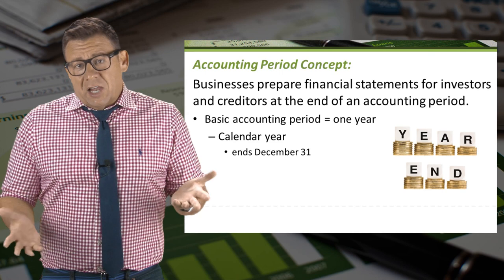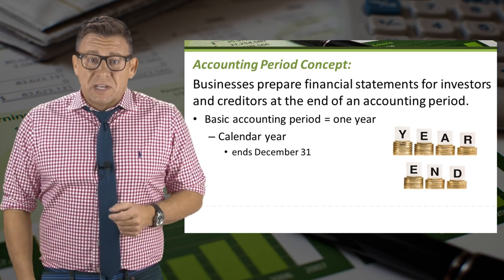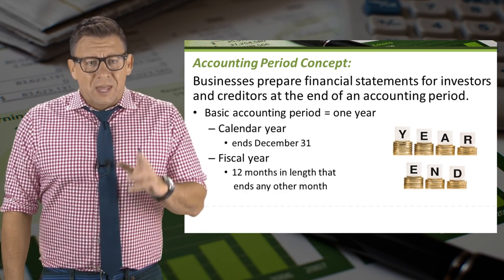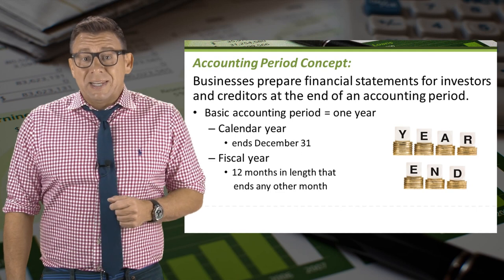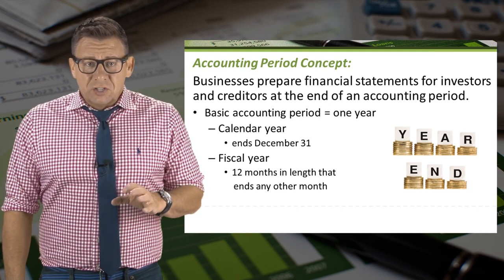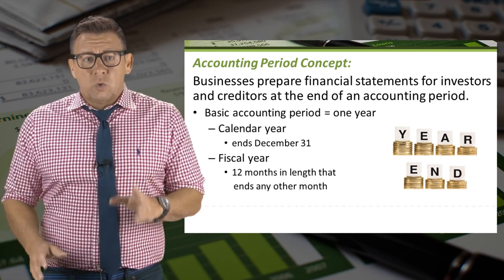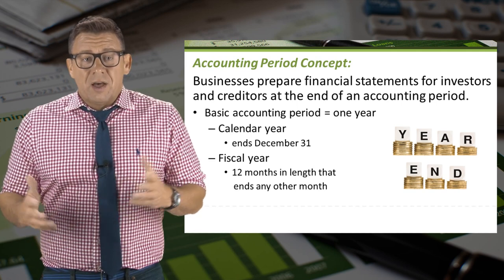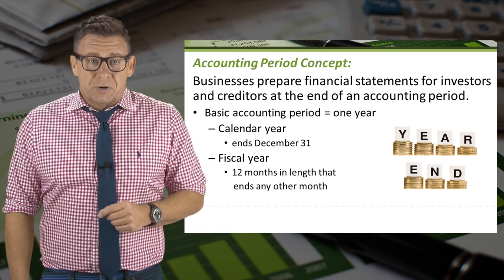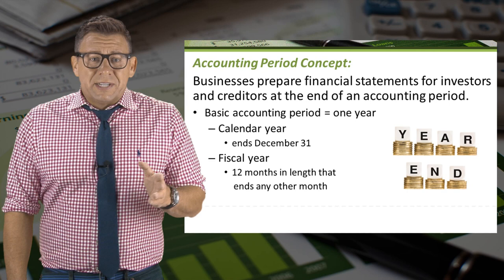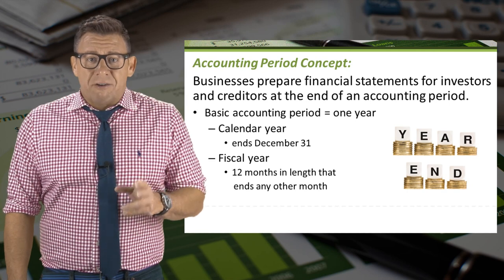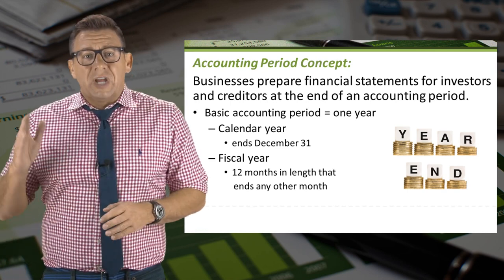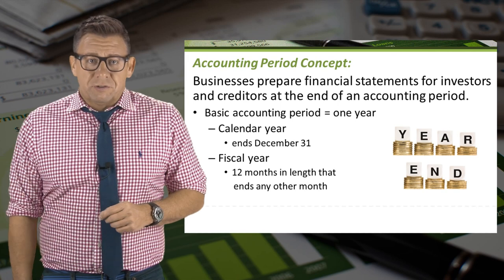The end of the calendar year is probably pretty obvious because it always ends on December 31st. A fiscal year might be less obvious. A fiscal year is any consecutive 12-month period ending in a month other than December. For example, retail stores often choose a fiscal year of February 1 to January 31st.